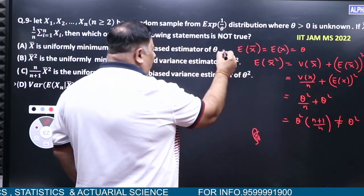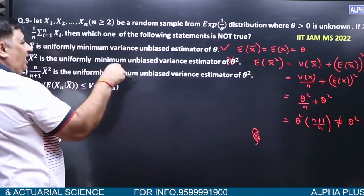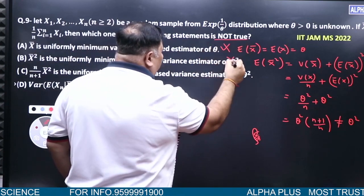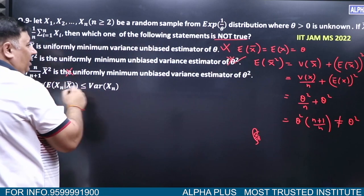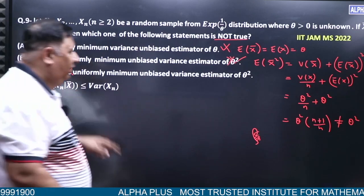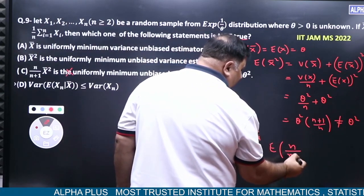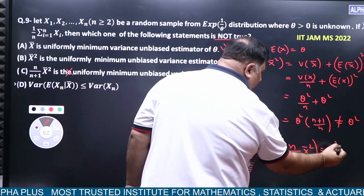So, it's wrong. This is not true. Not true means X bar square is not equal to theta square. This is the answer.